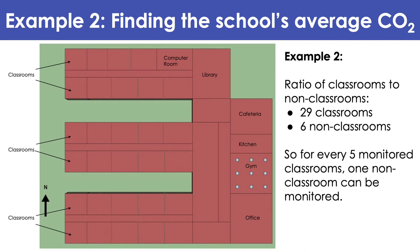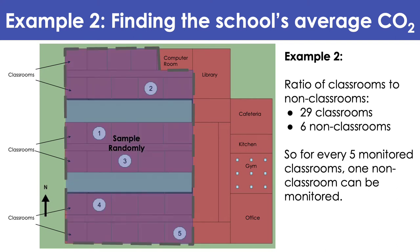If you also want to take into account non-classroom settings — not including transient spaces like corridors or lobbies — you can look at the ratio of classrooms to non-classrooms. In this case, there are 29 classrooms and six other types of spaces, which means for about every five monitored classrooms, you can monitor one other type — such as the computer room, office, or gym. So we randomly sample our first five classrooms, and then sample a non-classroom; in this case, it is the office.